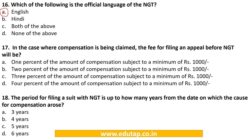MCQ 17: In the case where compensation is being claimed, the fee for filing an appeal before NGT will be: A. 1% of the amount of compensation subject to a minimum of Rs. 1,000. The correct answer is A. 1% of the amount of compensation subject to a minimum of Rs. 1,000. MCQ 18: The period for filing a suit with NGT is up to how many years from the date on which the cause for compensation arose? A. 3 years, B. 4 years, C. 5 years, D. 6 years. The correct answer is C. 5 years.